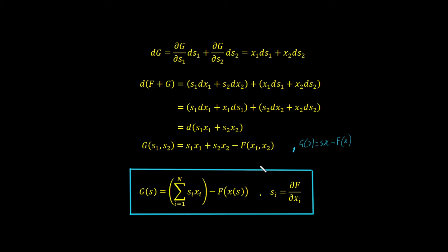We can extend this to a function of n variables. The function g of s equals the sum from i equals 1 to n of si·xi, minus f expressed in terms of its independent variables s — that is, minus f of x of s. And each si is simply the partial derivative of f with respect to xi.